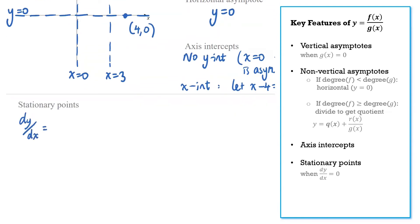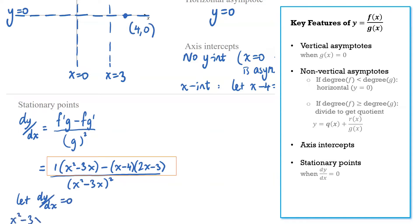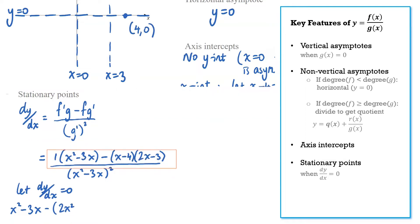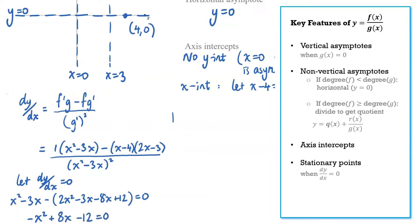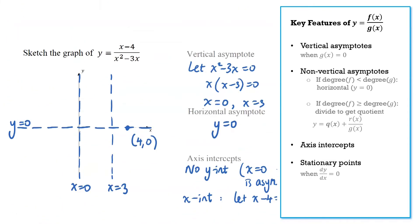So stationary points, now we let the derivative be 0. We'll need a quotient rule to calculate this derivative. So derivative of f times g minus f times the derivative of g all over g squared. And when we want to solve when that's equal to 0, we only need to consider the numerator. It will be 0 when the top is 0. So if we let that quadratic on the top be 0, we can solve that and we'll find two stationary points when x is 2 and when x is 6. Substituting those values in we can find that when x is 2, y is 1, and when x is 6, y is 1 ninth.